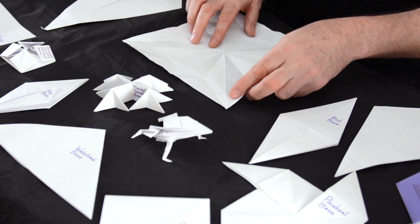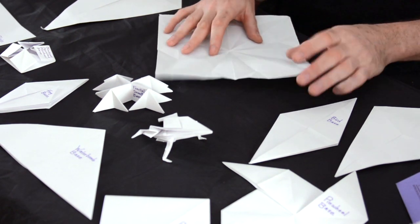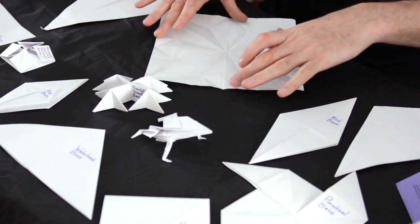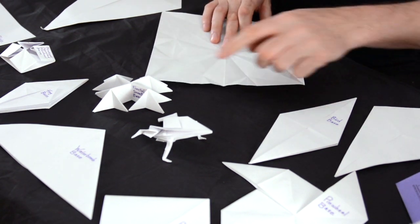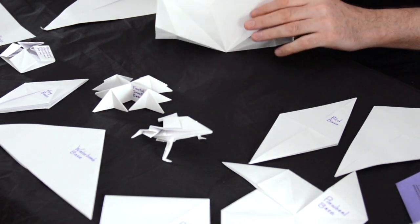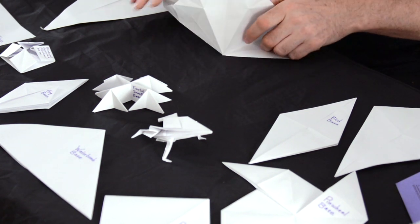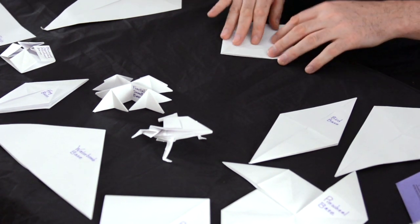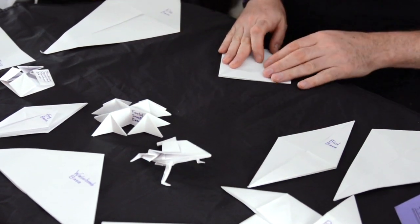What we do is we take our piece, and we take the diamond, we make our crosses, and we bring the three points down to the end. At this point, you may recognize this as the preliminary base fold.